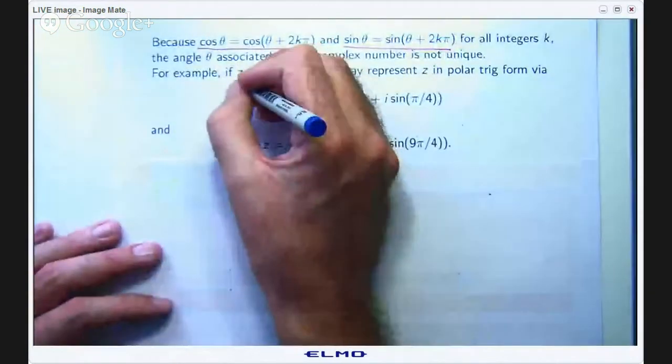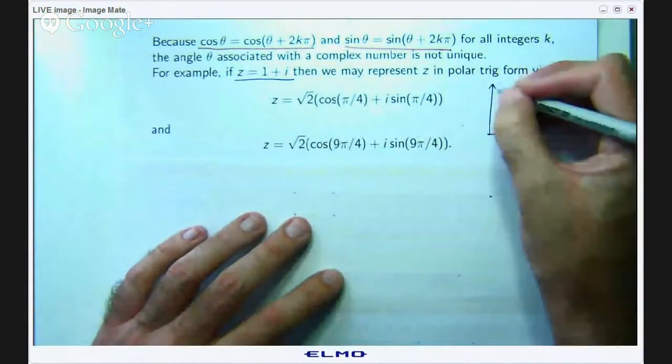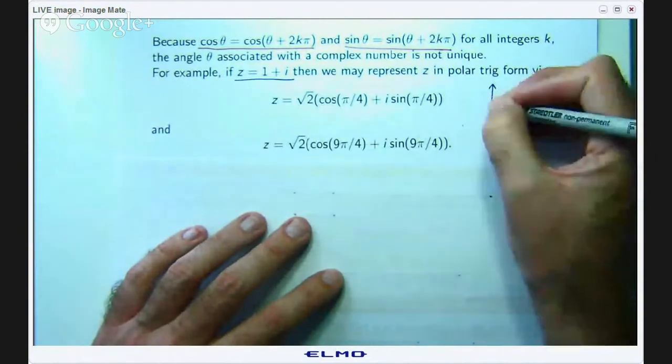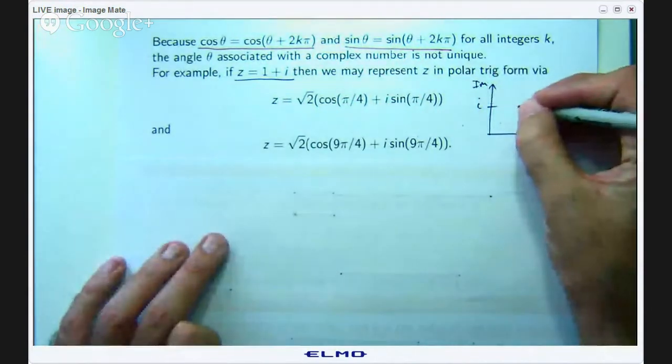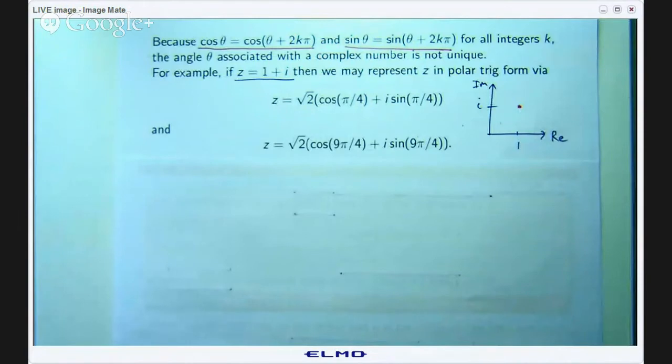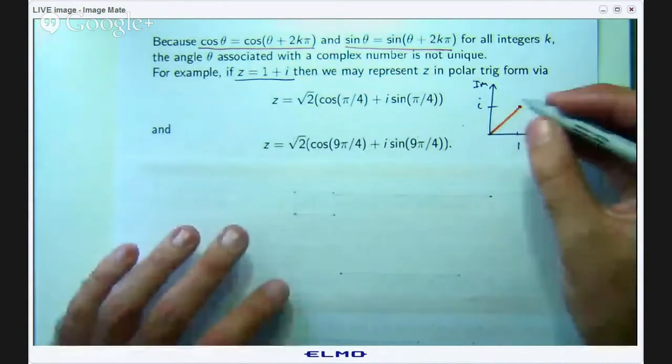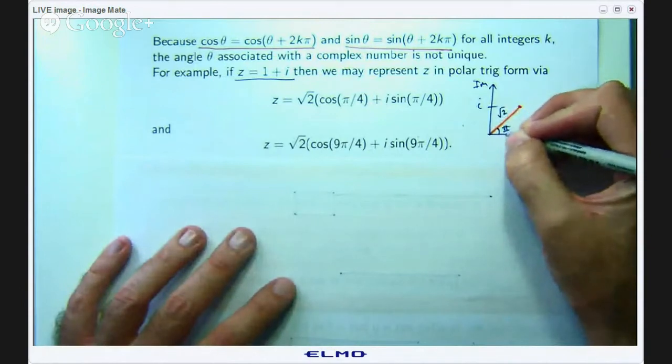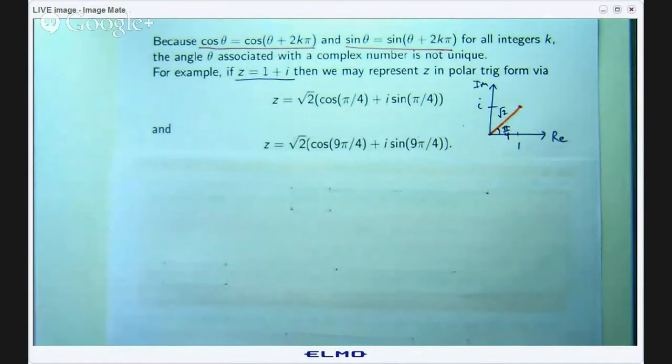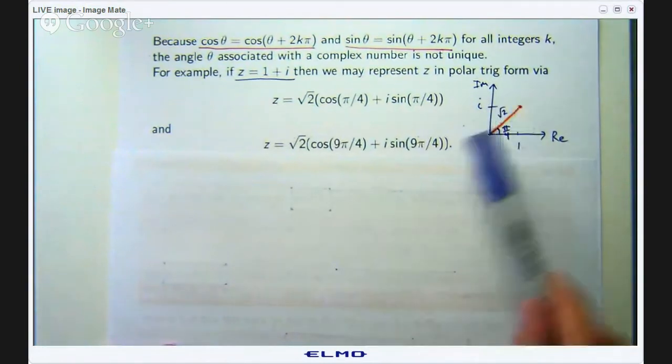Let me give you a definite example here. Suppose I have got the complex number z equals 1 plus i. I am going to plot that in the complex plane and using Pythagoras I know that the length there is going to be root 2 and using trig the angle to the positive real axis is going to be π on 4. But I know that I can spin around one more time, 2π radians and I will be back in the same place as long as I have not changed the length.